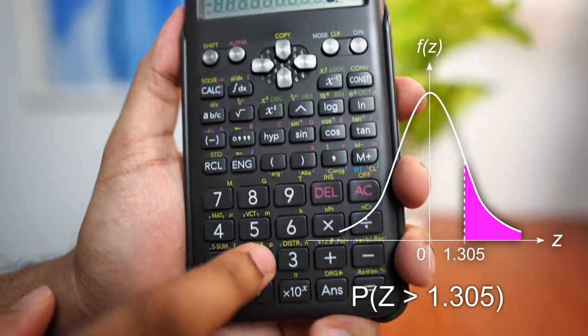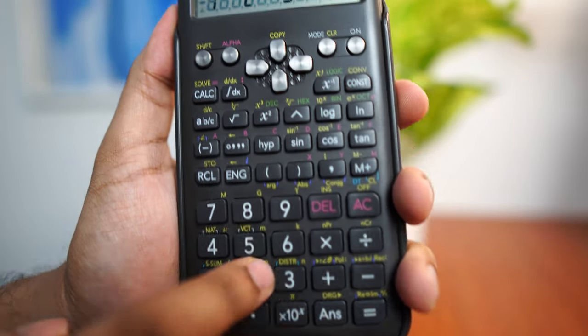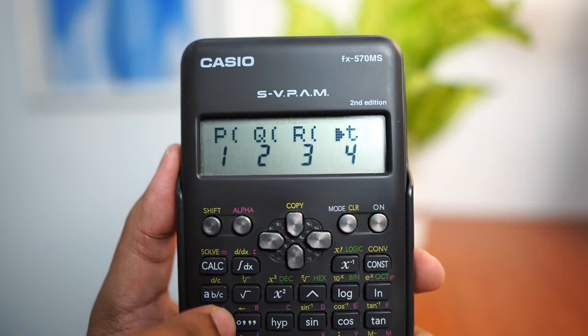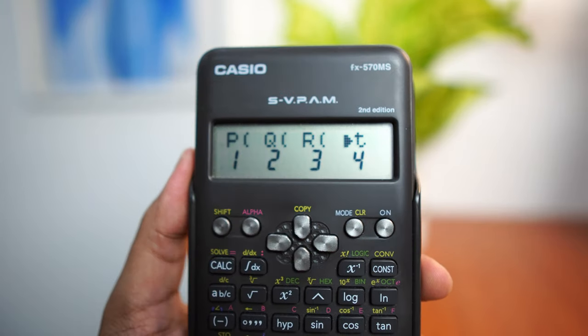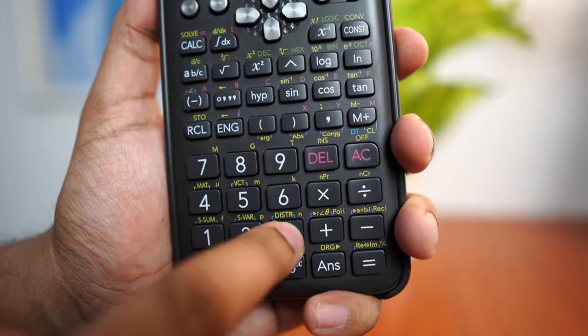Let's say you wanted to find the upper tail probability for the same thing. Now we are looking at this area right here. All you have to do is go to shift, 3 and choose R. R is for upper tail probability. Press number 3.